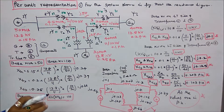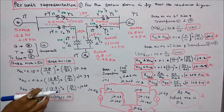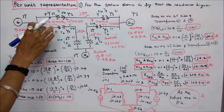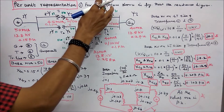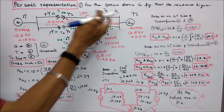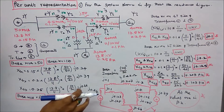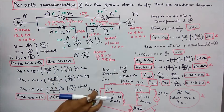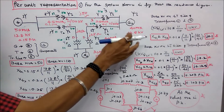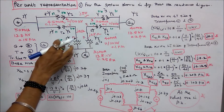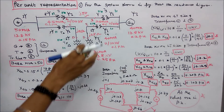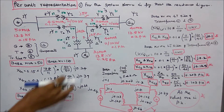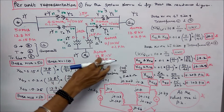Generator 1 rating is 50 MVA, 13.8 kV, reactance 0.15 per unit. Transformers T1 and T2: 45 MVA, 11/110 kV, reactance 0.15 per unit. Transformers T3 and T4: 25 MVA, 11/110 kV, reactance 0.1 per unit. Generator 2 rating is 40 MVA, 13.8 kV, reactance 0.25 per unit. Generator 3 rating is 30 MVA, 13.8 kV, reactance 0.25 per unit.